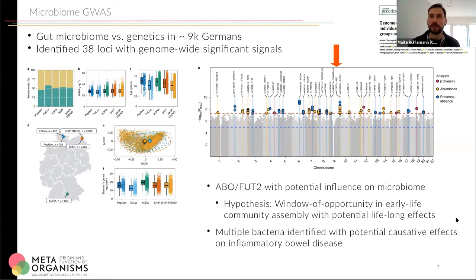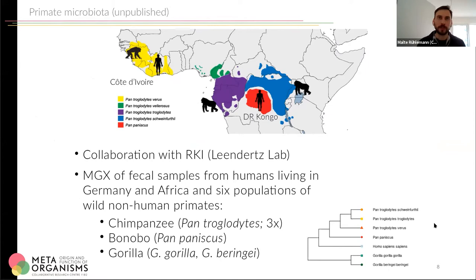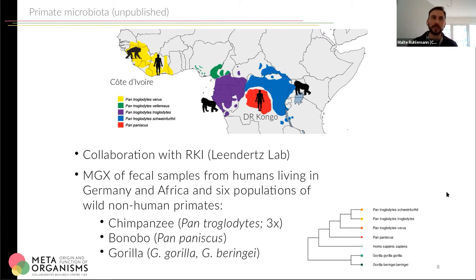Coming to the second part of the talk: we are also looking at primate microbiota, and we're doing this together with the Leendatz lab from the Robert Koch Institute in Berlin. We performed metagenomic sequencing from fecal samples from humans living in Germany, but also from humans living in Africa in more rural areas, and from six populations of wild non-human primates — three subspecies of chimpanzees, one small population of bonobos, and two subspecies of gorilla.